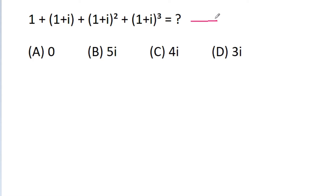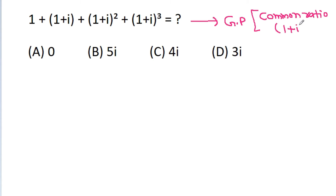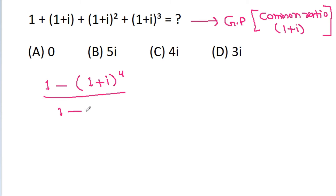This sequence is in GP with common ratio (1 plus iota). So the sum of the GP will be 1 minus (1 plus iota) to the power 4, divided by 1 minus (1 plus iota), and the 1s will cancel.